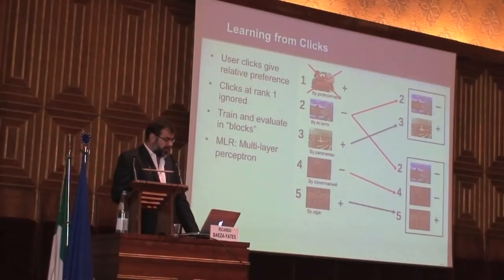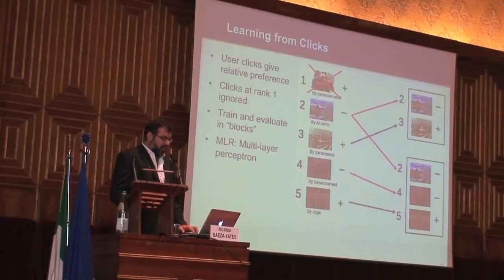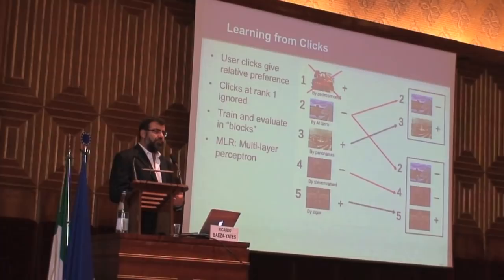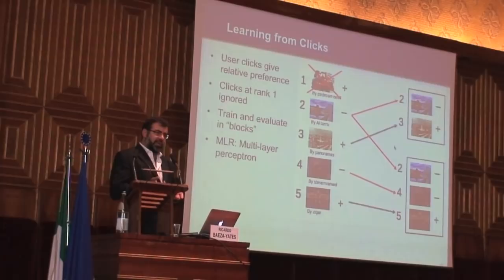We have to unbias clicks, and there are two or three papers on how to unbias clicks to account for this bias of the user interface and the ranking — the ranking bias being the main one, especially when looking at only the top 10 or top 20 results. We do this idea of training and evaluating in blocks. For image search the blocks are more complicated than web search, but the idea is the same — blocks could be sequential reading or neighborhood reading.